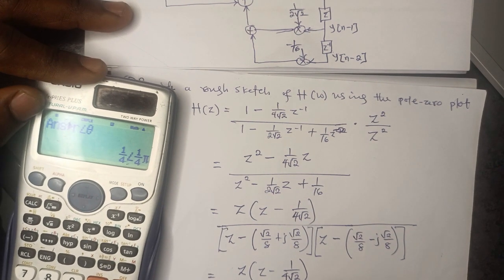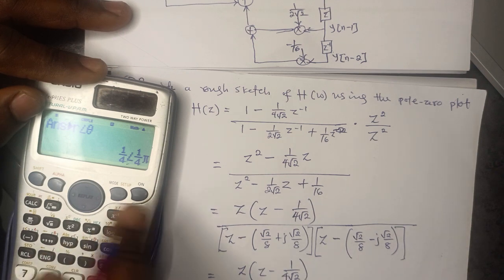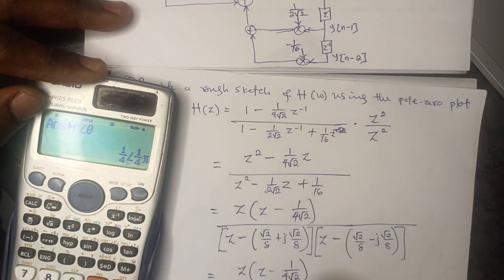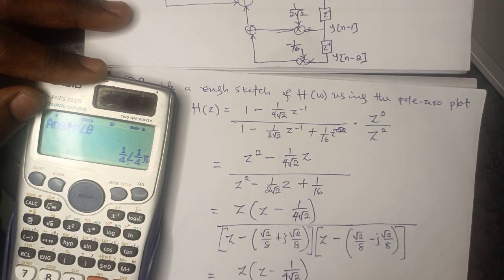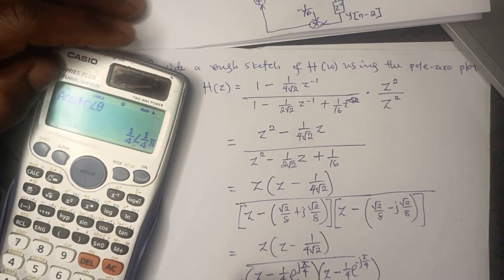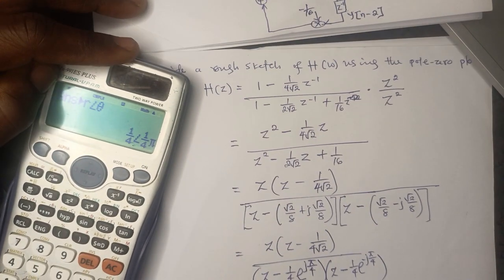The second factor is the complex conjugate, so it is Z − (1/4)e^(−jπ/4).